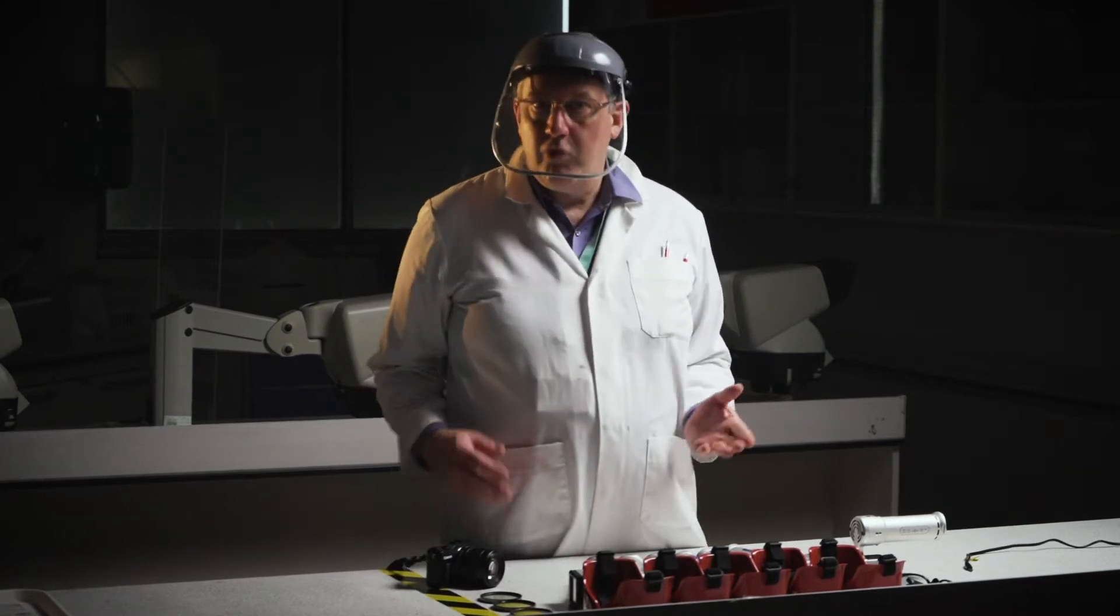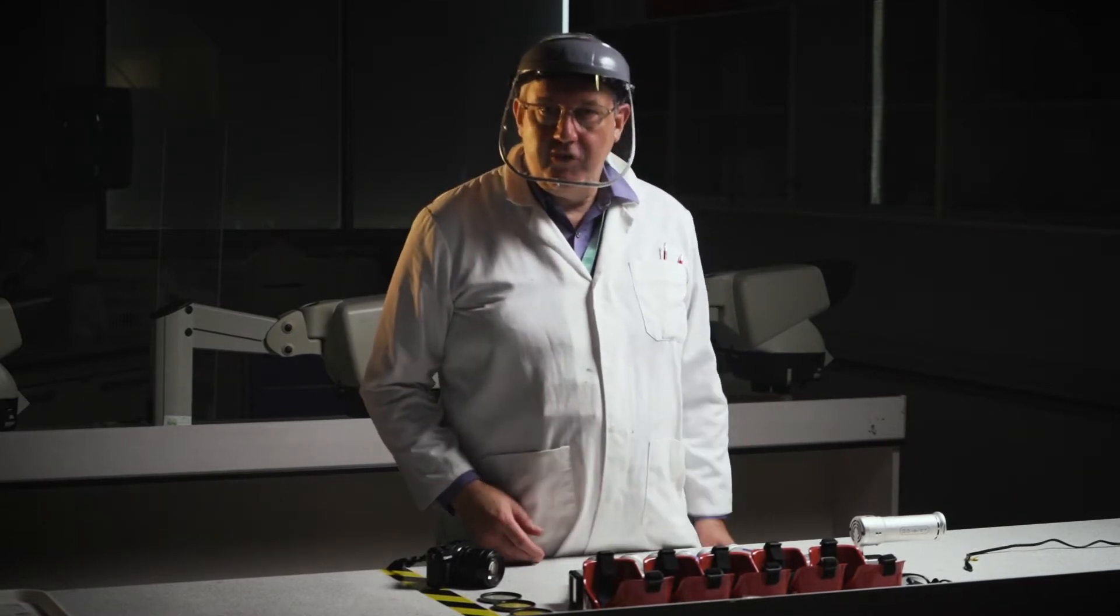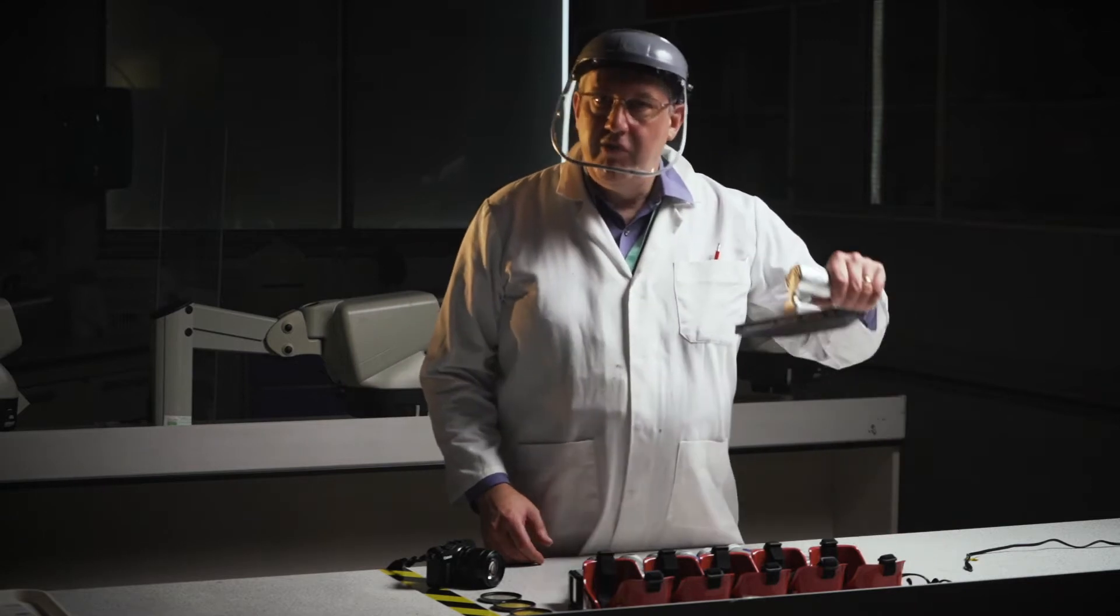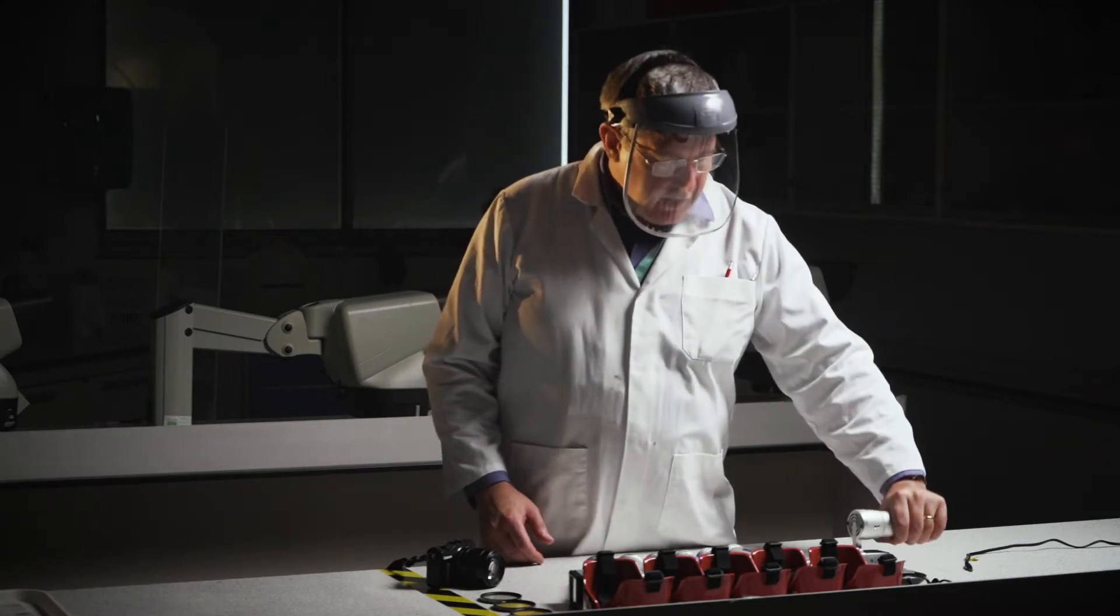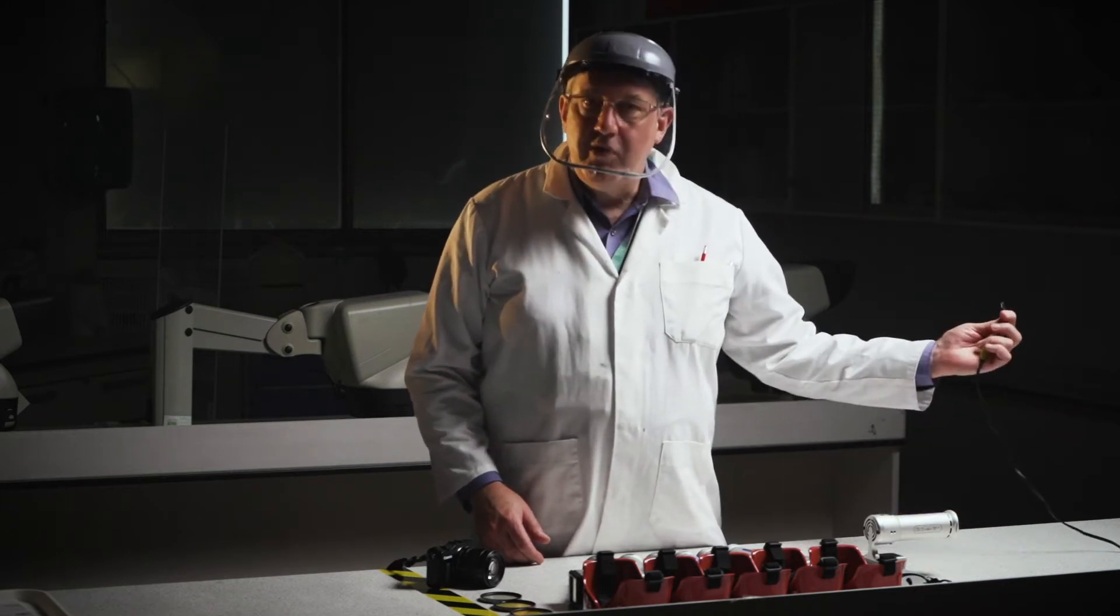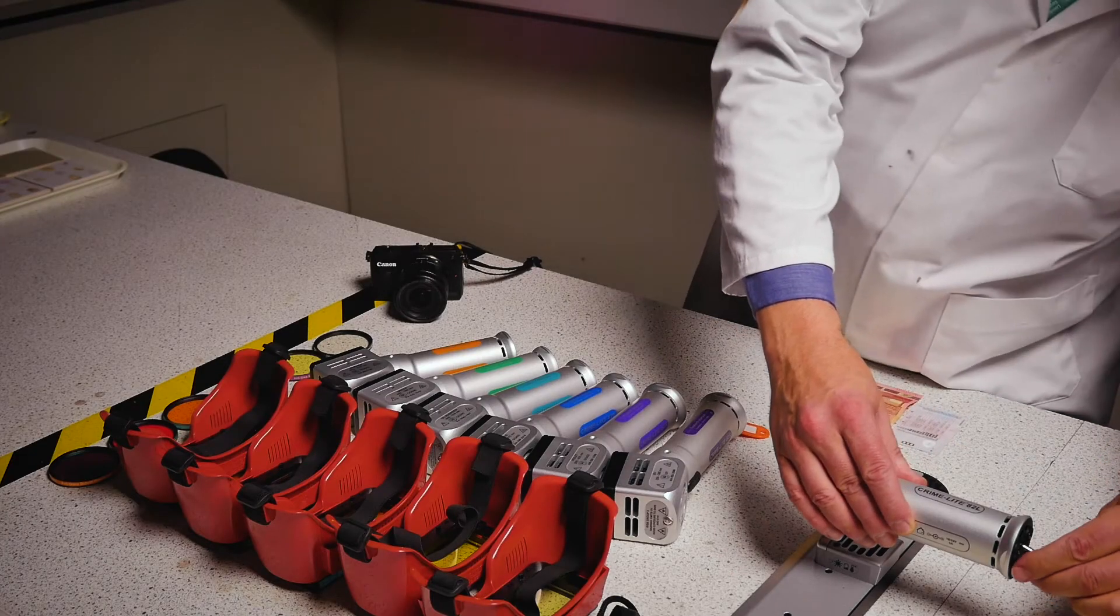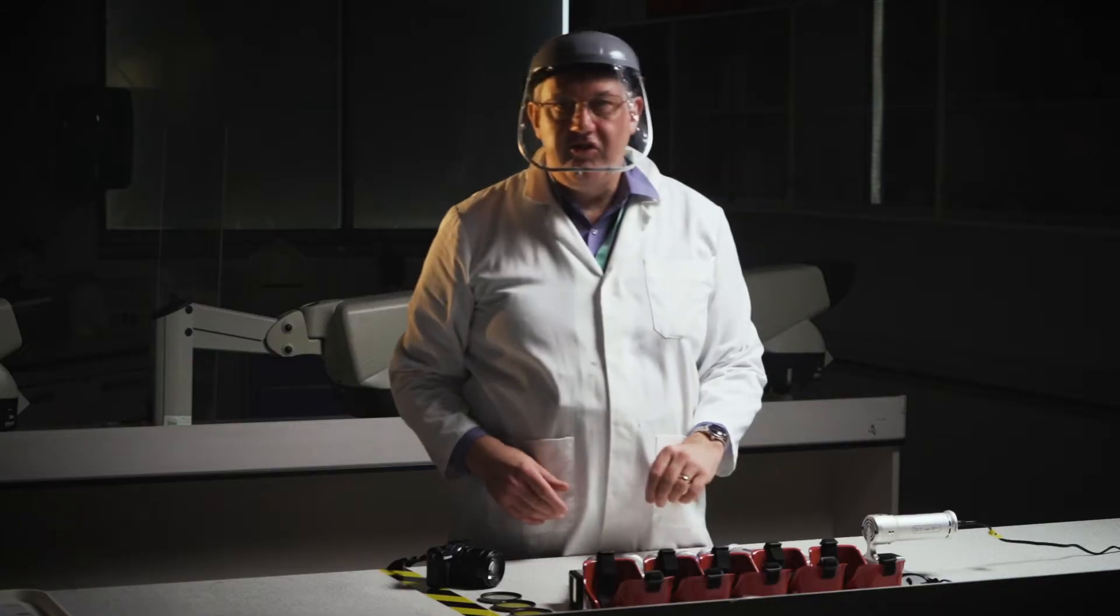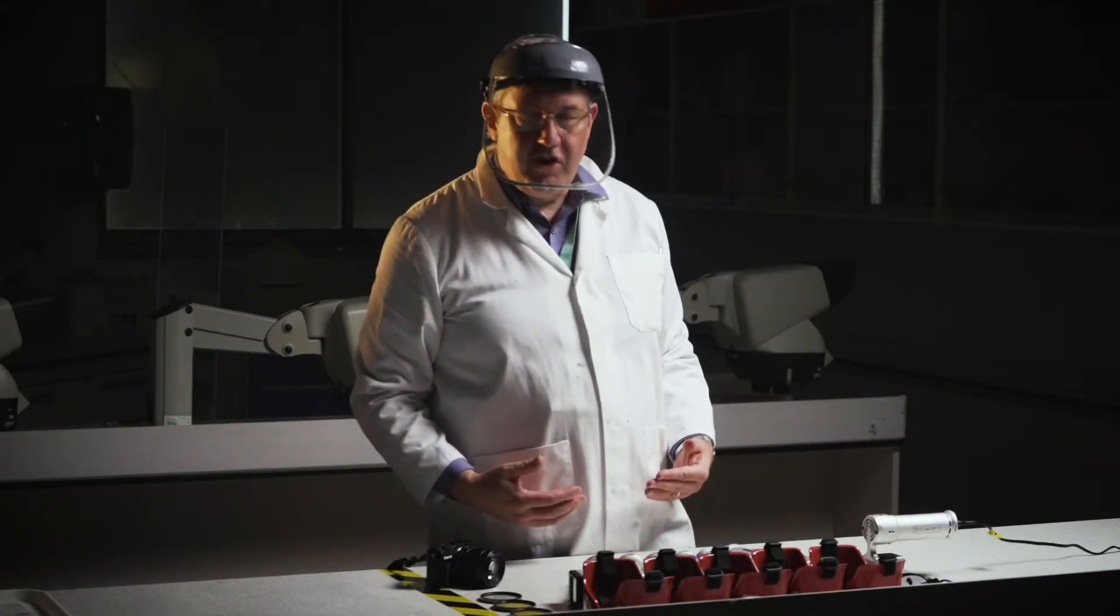So first of all we'll look at the oblique light source, the ATL, which is this light source here. And to connect it for a search we need to put the power lead into the center of the back. So this is plugged into mains, we can also operate it from a battery.